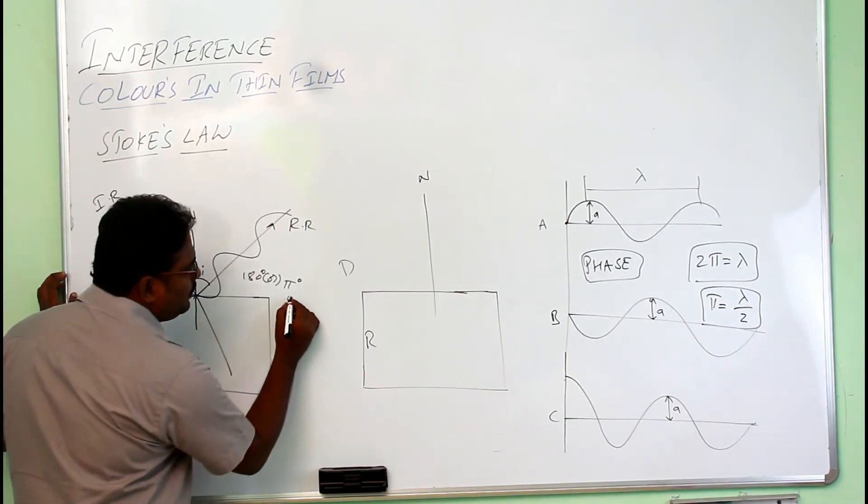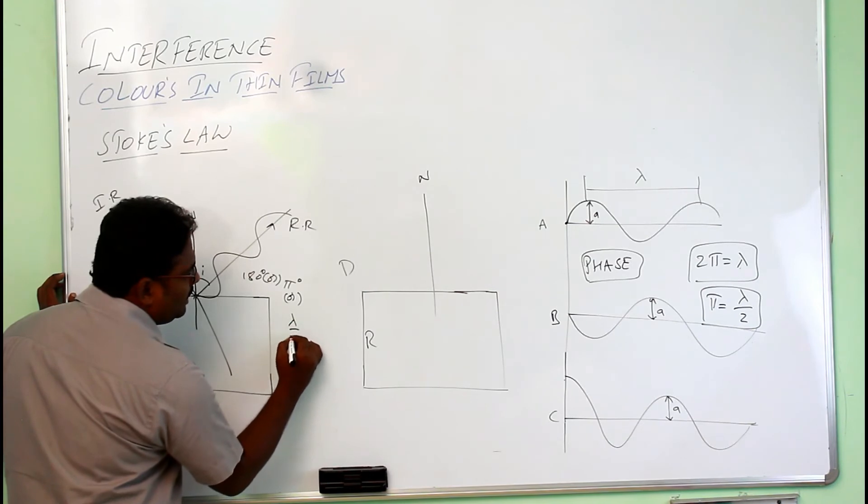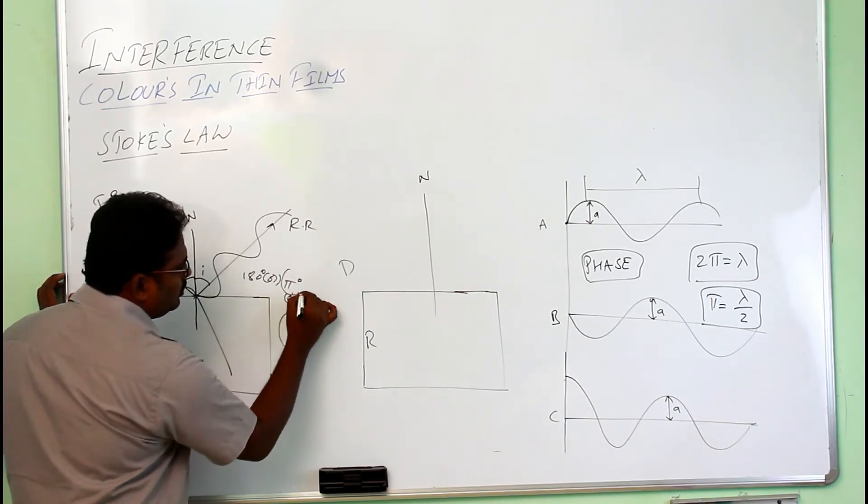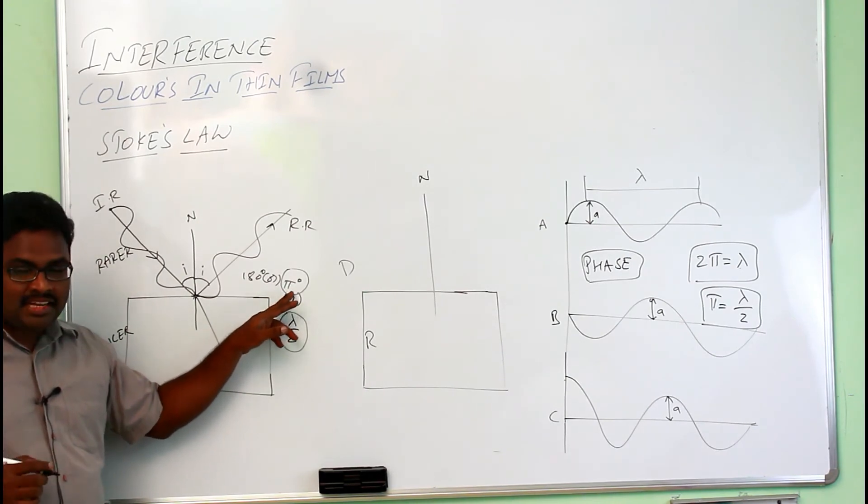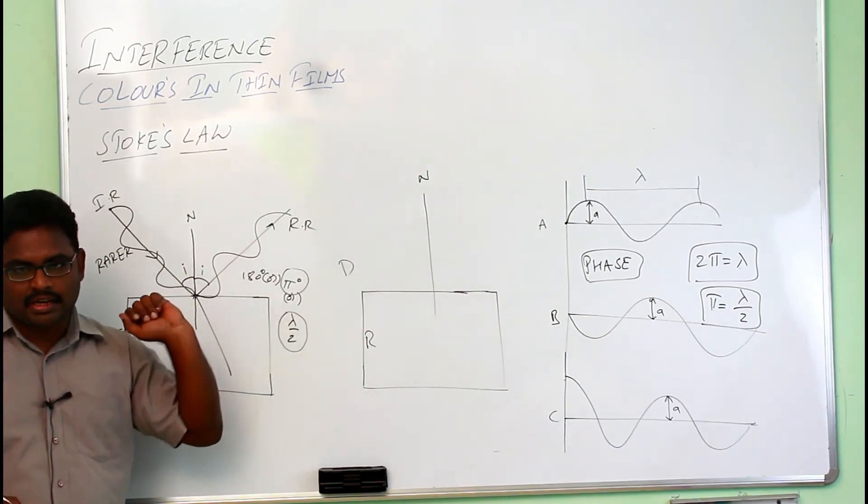Or a path difference of lambda by 2, as we discussed earlier.